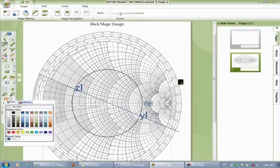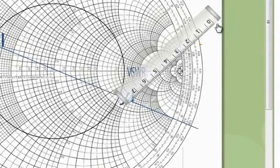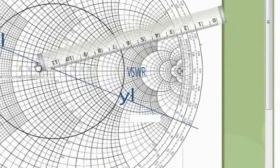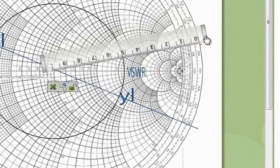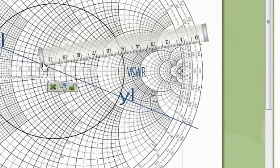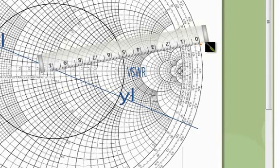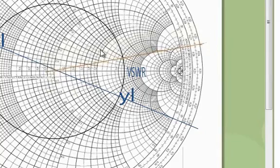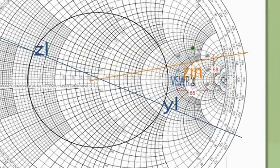Locating the point and drawing a line from the center. The intersection of the line and the gamma circle gives us the input impedance.